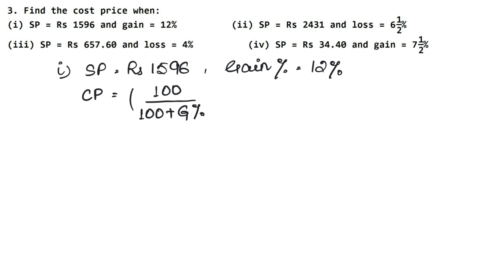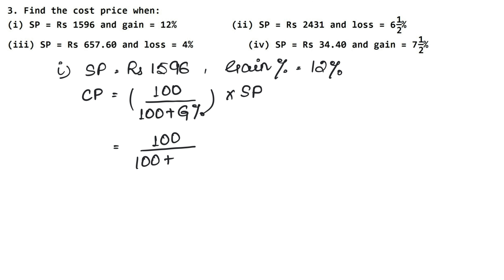The formula is: CP = 100 upon (100 plus gain percent) into SP. This is the formula. So here, 100 upon (100 plus 12) into SP, which is 1596.